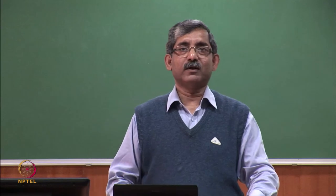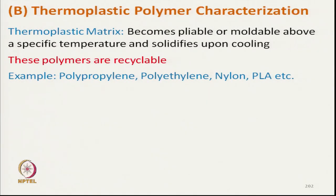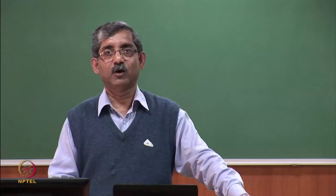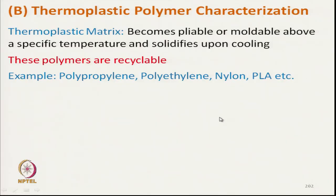For thermoplastic polymer characterization, a few extra tests are required which are not needed for thermoset matrices. Thermoplastic matrices become pliable or moldable above a specific temperature and solidify upon cooling. We must know the softening temperature (Tg) or the melting temperature, because if the softening temperature is very low, its application will be limited. Examples of thermoplastic polymers include polypropylene, polyethylene, and nylon.